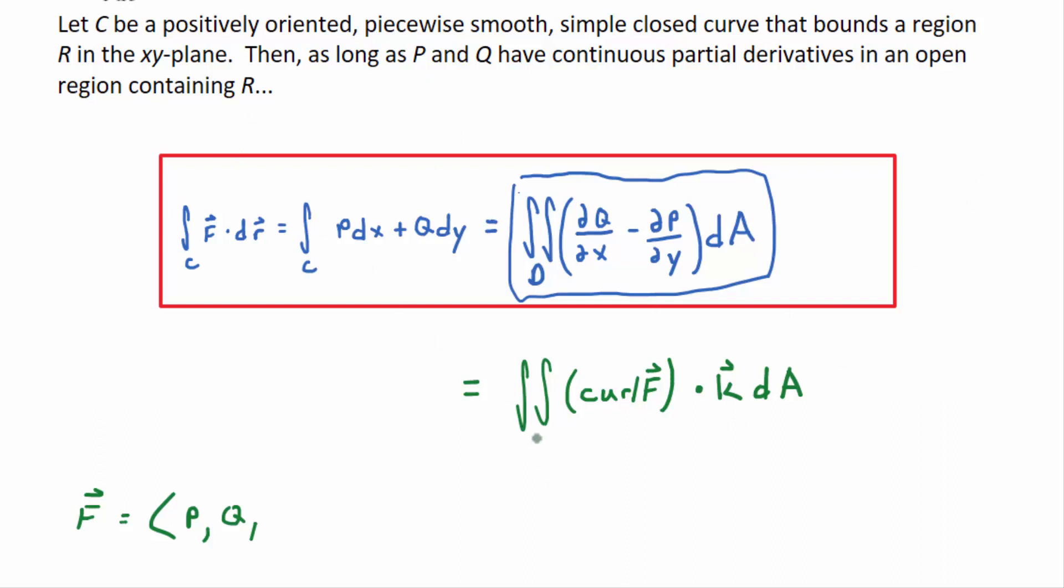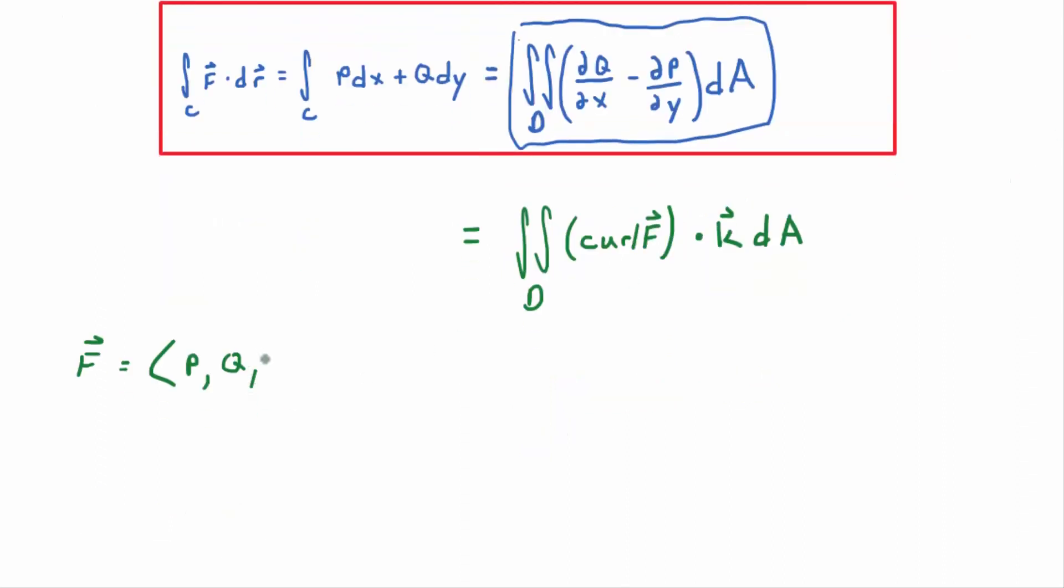So r is going to be the component of the vector field. So what is then the curl of f? This is a good review. What do we do with del, the vector operator, the vector of operators? We cross it with f. So del cross f, not a true cross product, but it looks like one.